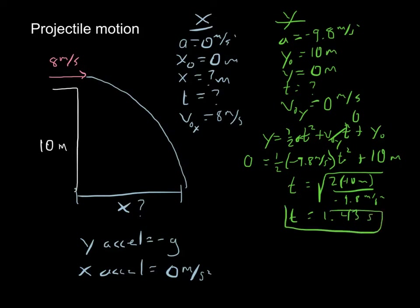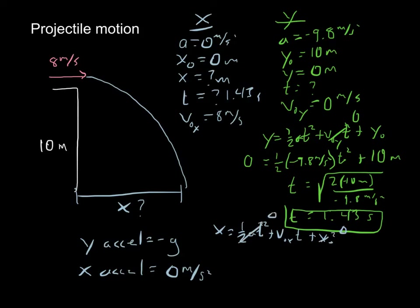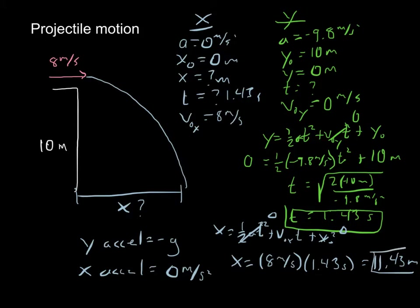Now I know time is 1.43 seconds, so I go to the x direction. Using x = ½at² + v₀x·t + x₀, acceleration is zero, so that term drops out, and x₀ is zero. Therefore x = v₀x · t = 8 meters per second × 1.43 seconds = 11.43 meters. To summarize: we separated into x and y, solved for time in y, then plugged that time into x to find the distance.